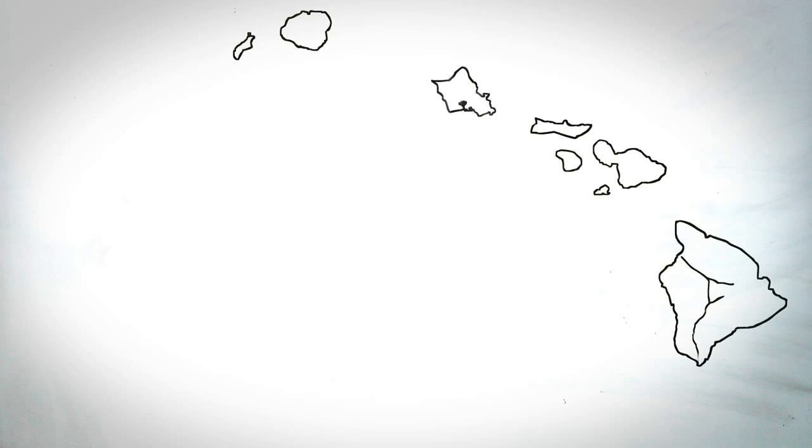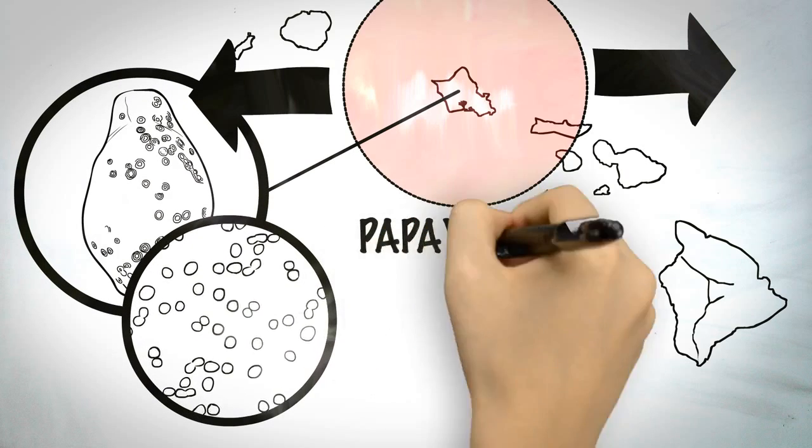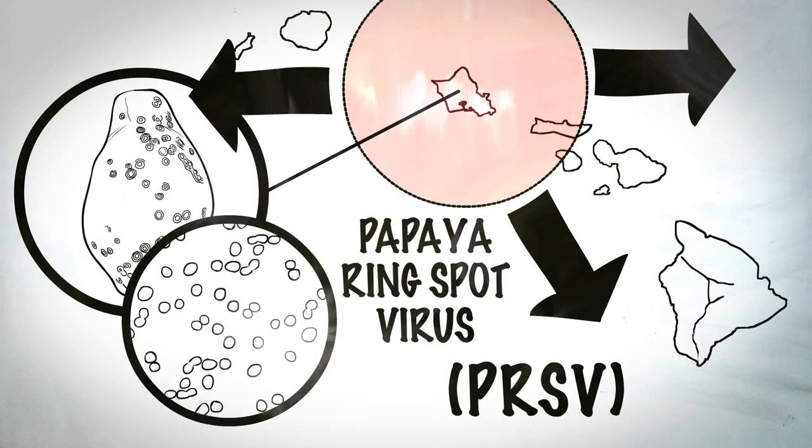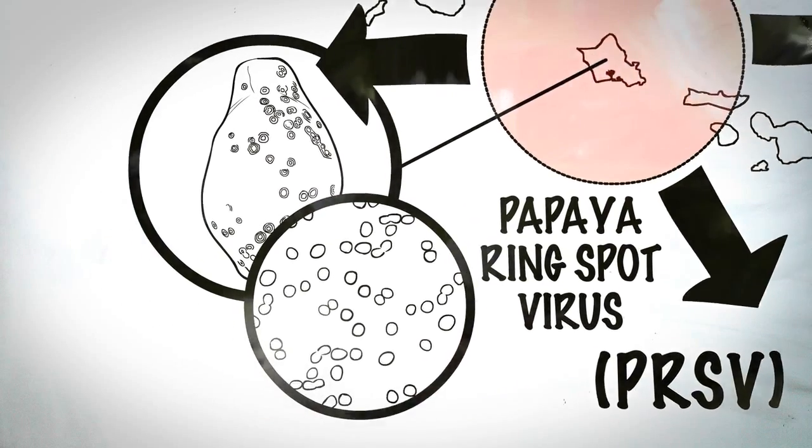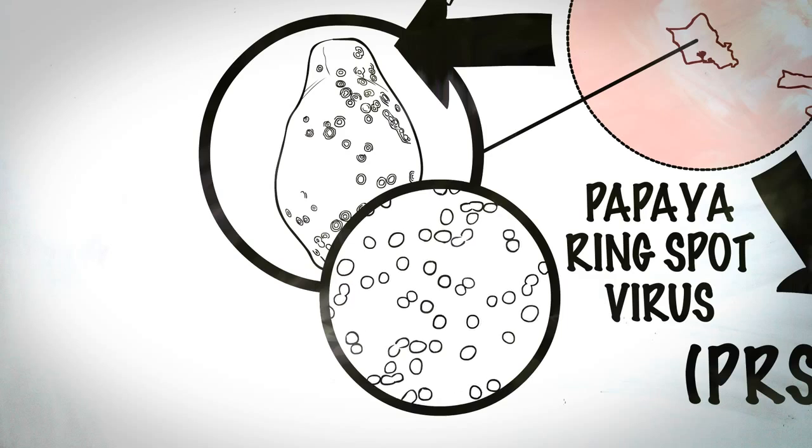Since the 1940s, the Hawaiian papaya industry had been battling a problem, the destructive and rapidly spreading papaya ring spot virus, a.k.a. PRSV. PRSV deforms the papaya fruit and, in young plants, destroys the plant's ability to produce fruit at all.